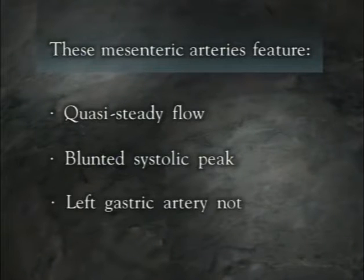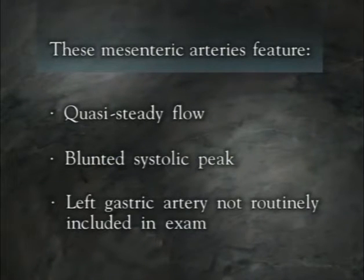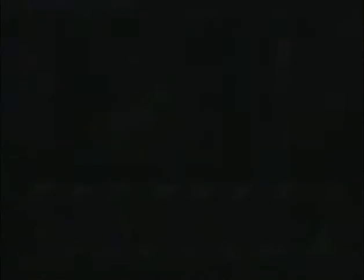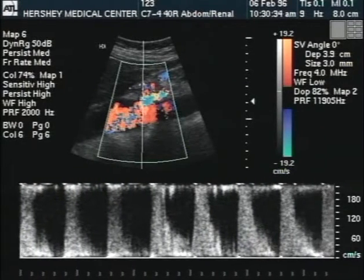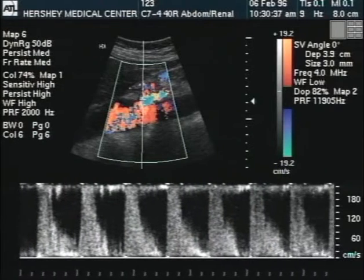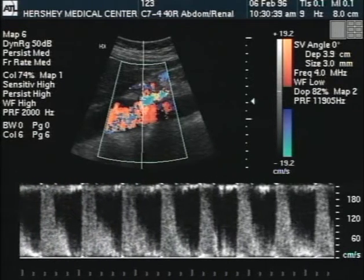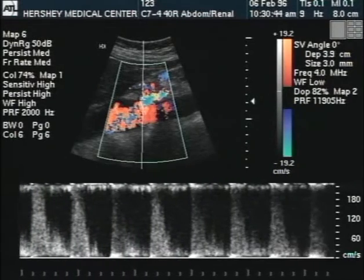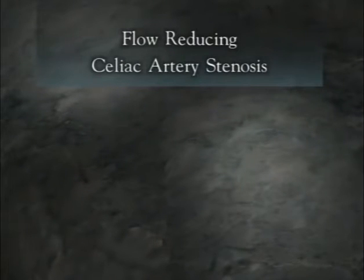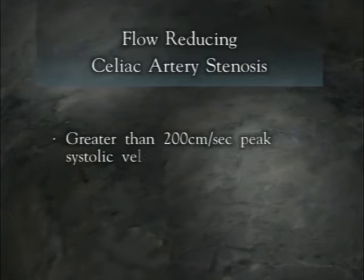The left gastric artery is not routinely visualized or included in the vascular evaluation of the mesenteric arteries. If these arteries are stenosed, the peak systolic and end diastolic velocities will increase in proportion to the severity of the stenosis. Several investigators have indicated that a peak systolic velocity greater than 200 centimeters per second suggests a diameter reduction of the celiac artery greater than 70%.